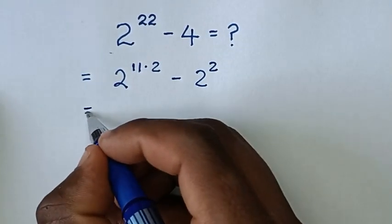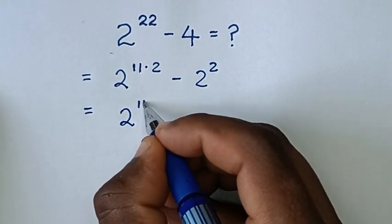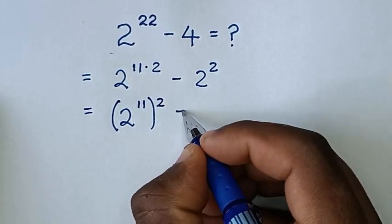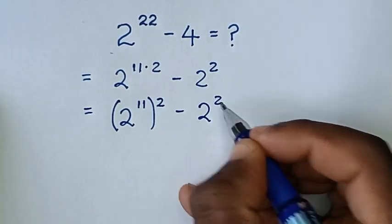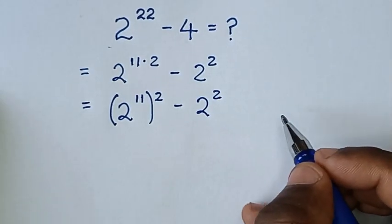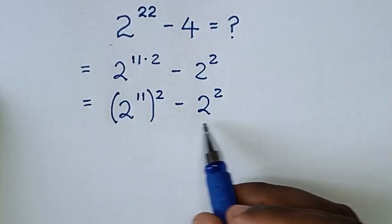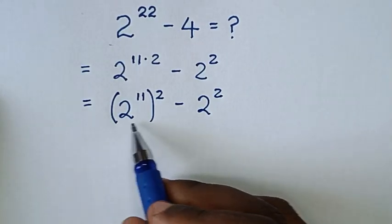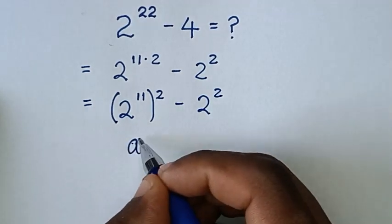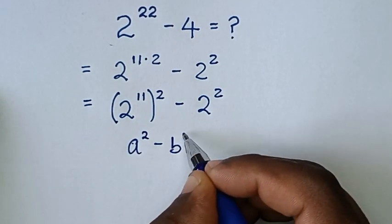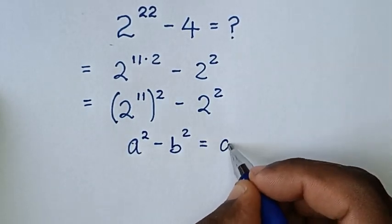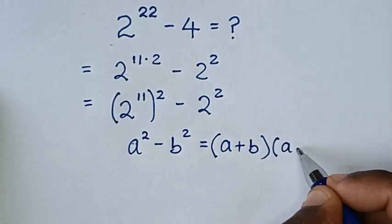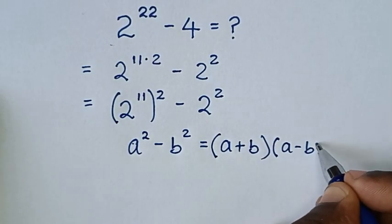Then it will be equal to: 2 power of 11 we take inside the bracket, power of 2 outside the bracket, minus 2 power of 2. Then from here it is now in the form of difference of two squares, so we will apply the difference of two squares rule which is: a squared minus b squared is equal to a plus b, bracket, times a minus b, bracket.